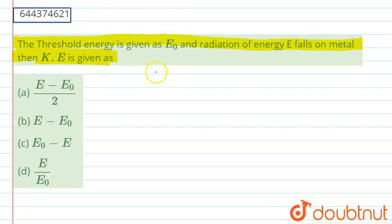So basically, threshold energy is the minimum energy which should be possessed by electron to come out from the metal surface. And here E is the energy of the radiation which is falling on the metal.